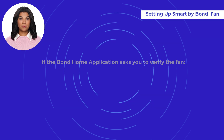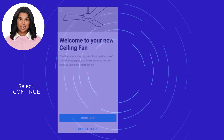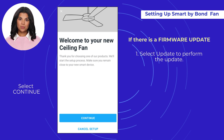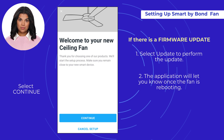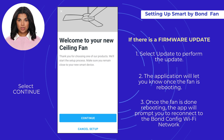If the Bond Home application asks you to verify the fan, enter the four-digit PIN, which may be located in the manual, or press and hold Power or Stop on the associated remote for six seconds. Next, select 'Continue'. If a firmware update is available, select 'Update' to perform the update. The application will let you know once the fan is rebooting, and once done rebooting, the app will prompt you to reconnect to the Bond Config Wi-Fi network.